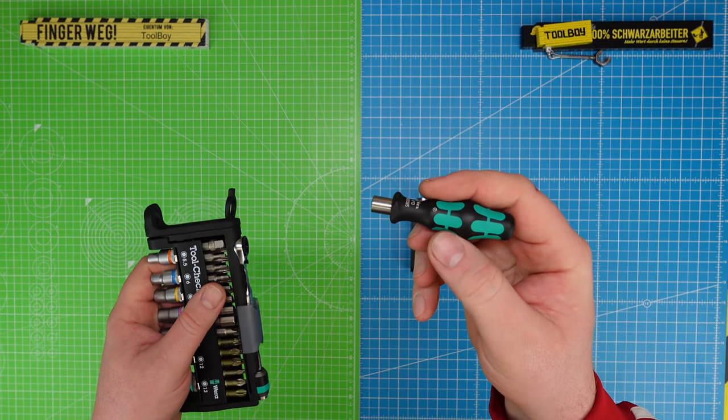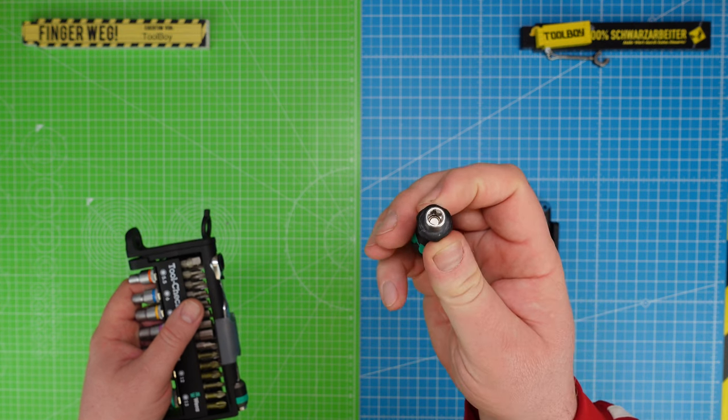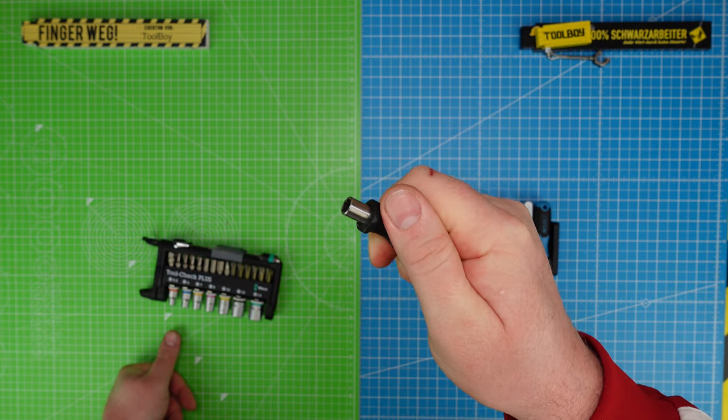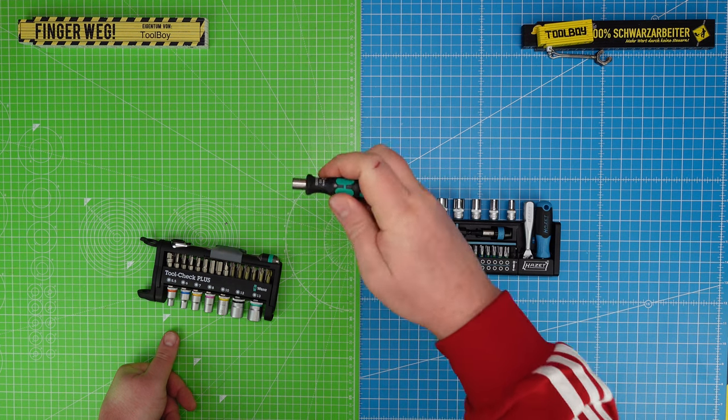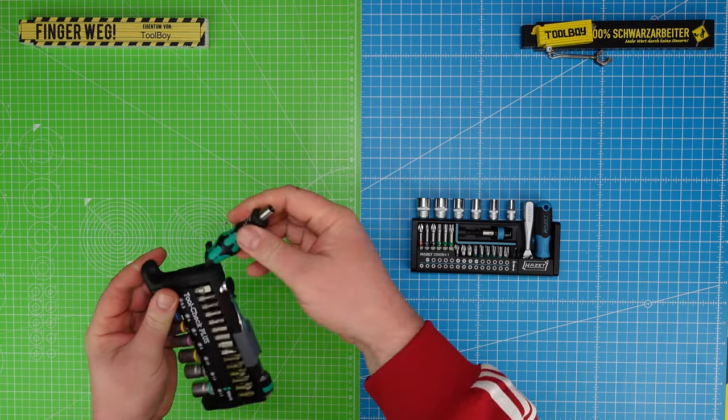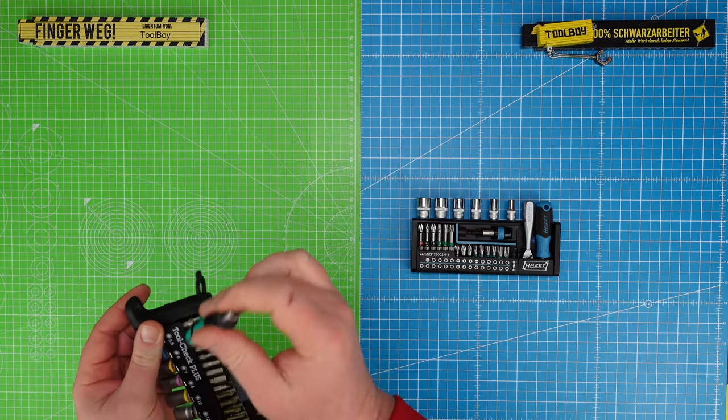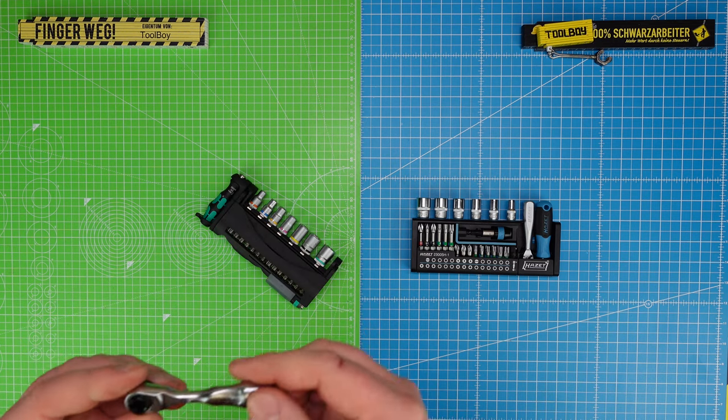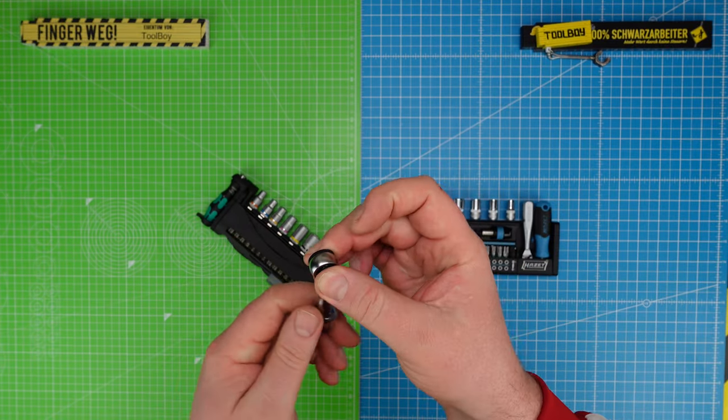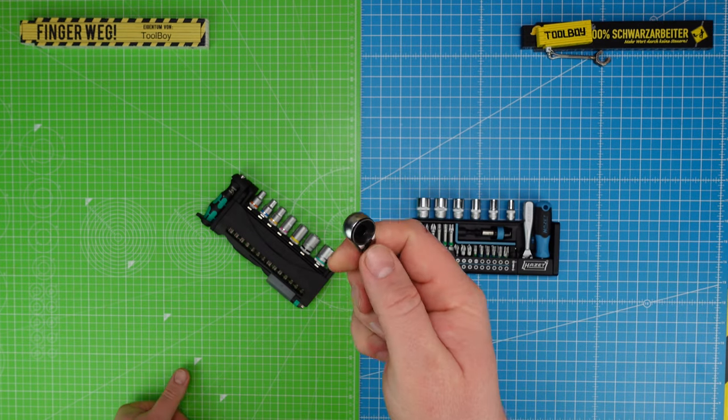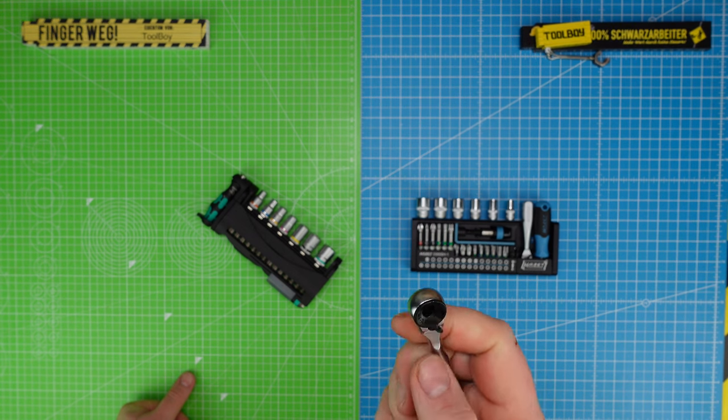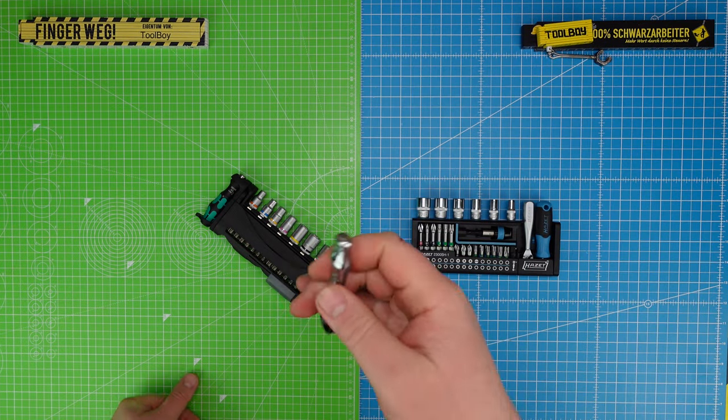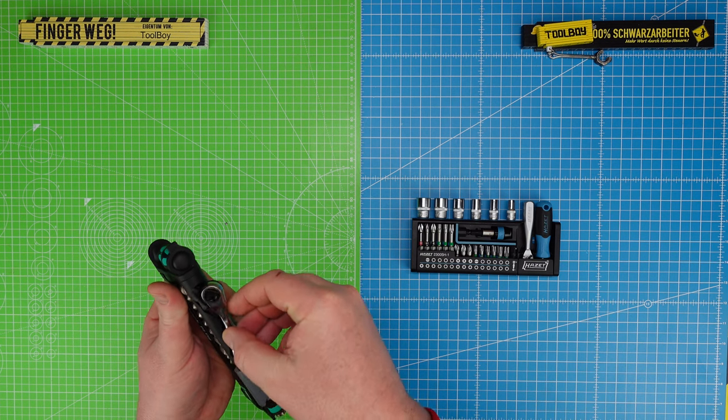This Kraftform Plus bit holder with magnet for the hex bits has a two-component grip, soft so you can apply good torque with anti-roll protection. The Zyklop ratchet holds firmly, has a 6-degree roll angle, sounds good, fine ratcheting. You can switch direction with the lever. I've shown you the Signant technology before. It's robust and can handle up to 65 Newton meters.